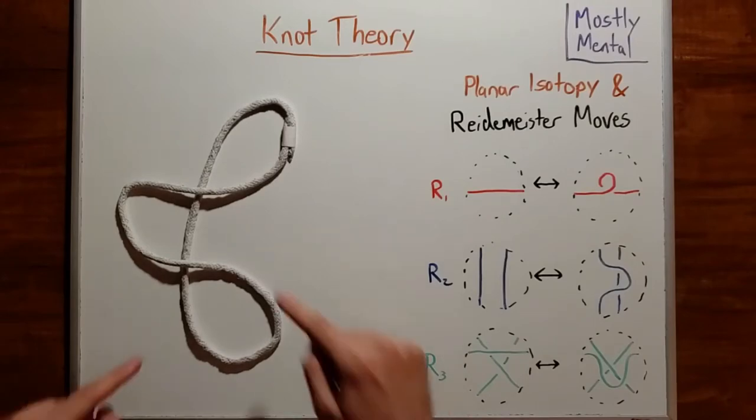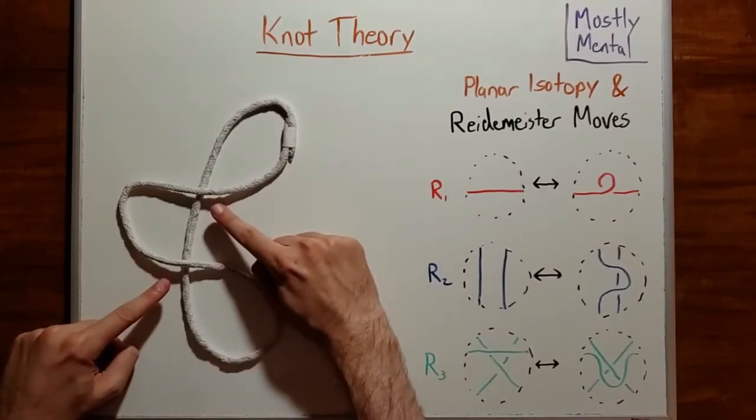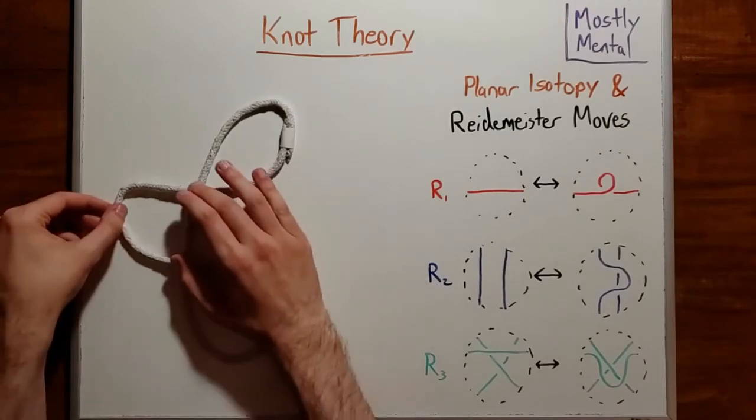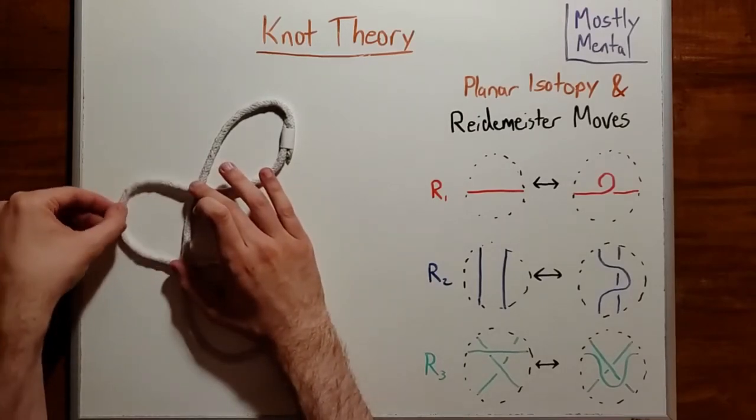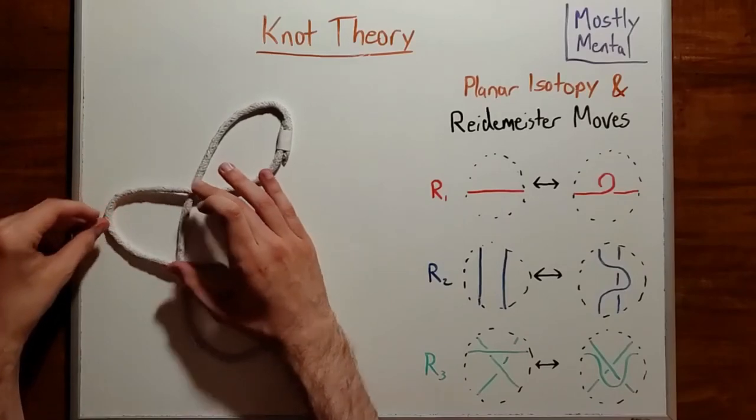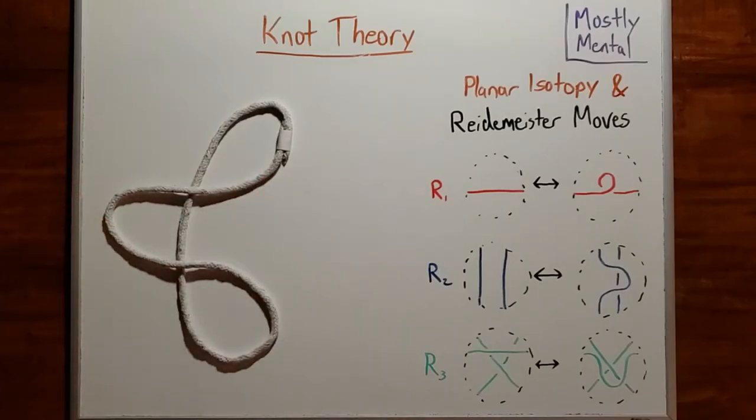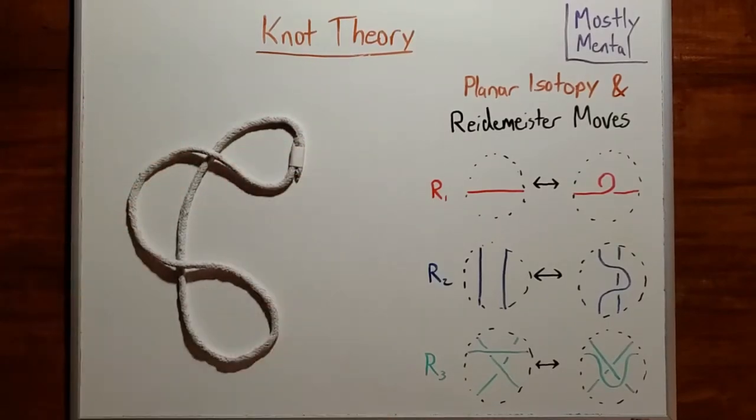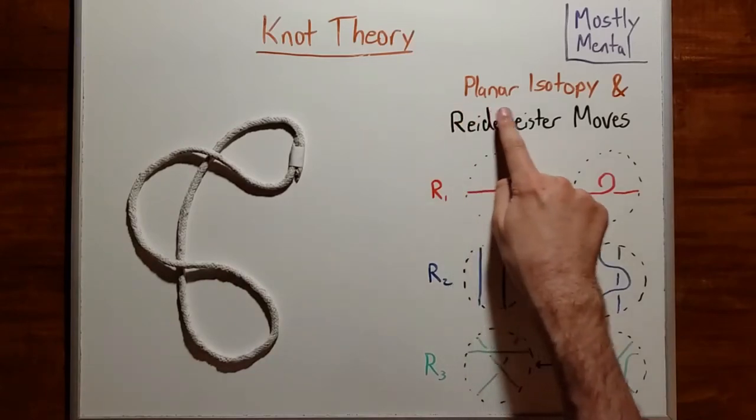The first thing to notice is that the crossings are really the important part of a knot, so what happens between them doesn't matter all that much. So we're free to move the strands between crossings as much as we like, so long as we don't cross them over themselves or each other. And we can also slide a crossing along a strand, so long as it doesn't bump into the next crossing. And all of this stuff that doesn't add or rearrange crossings is known as planar isotopy.